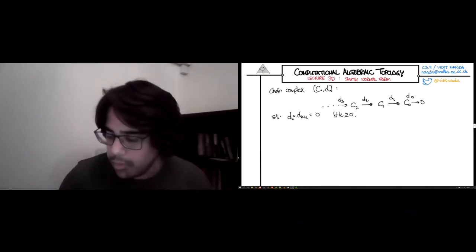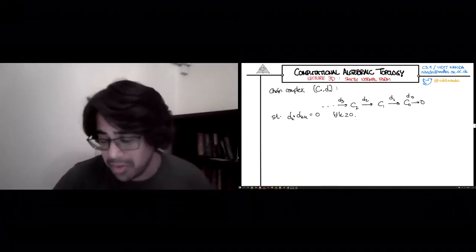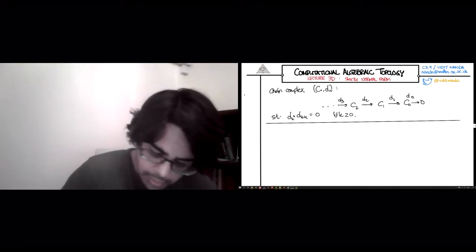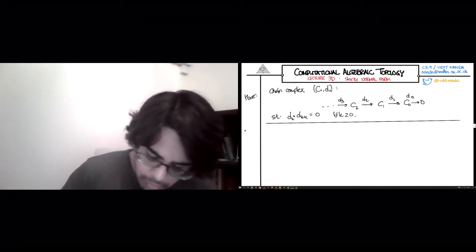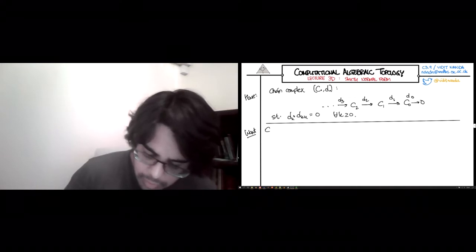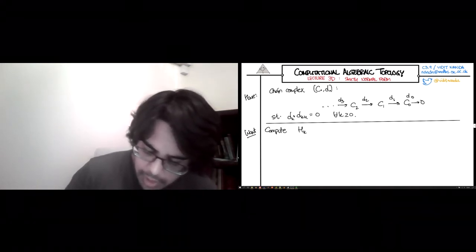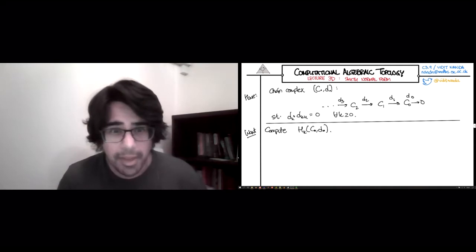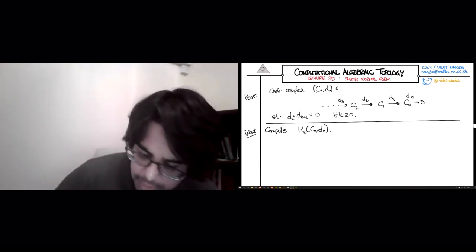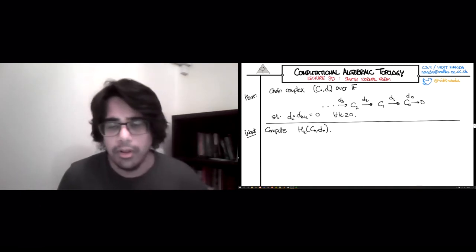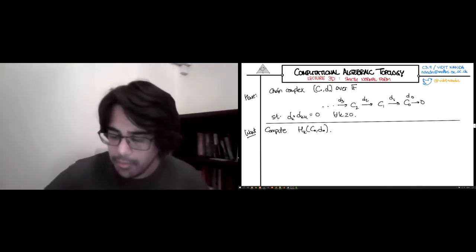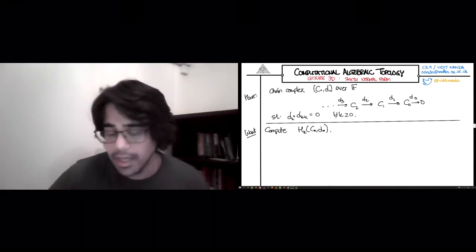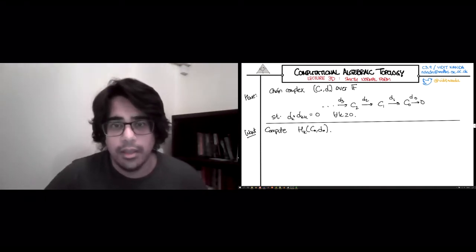And what we want is to compute homology. And if all you care about are the - so here's what we have - and what we wanted is to compute the homology groups hk of CD. And if all you wanted was to learn the dimensions of these homology groups as vector spaces over some field F, where all these chain groups are vector spaces over that, if that's all you wanted to do, then we have a recipe.